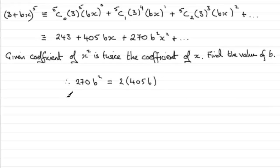So we'll expand this. We've got 270b squared equals 2 lots of 405, so that's going to be 810b.